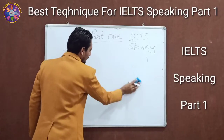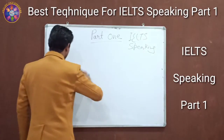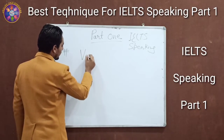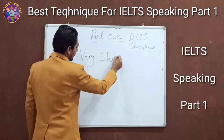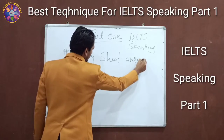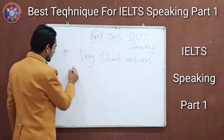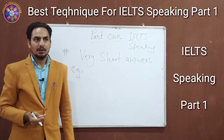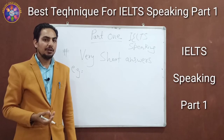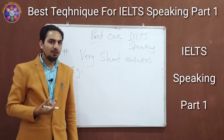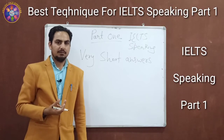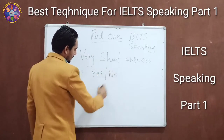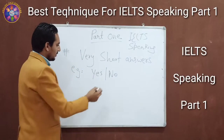Now I am going to tell you what mistakes students normally make. The first mistake is giving very short answers. For example, if they ask you 'do you like to try new food?' and you simply say 'yes' — just yes or no — that is a wrong approach.